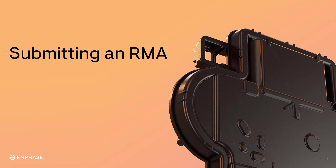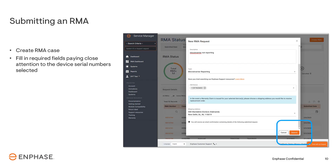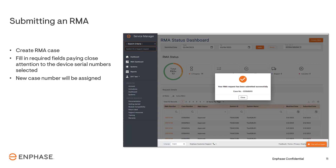Submitting an RMA case is easier than ever with Service Manager. Create an RMA case by clicking the Create RMA button in the upper right corner of the screen. Fill out the required fields and press Submit. Pay close attention to the device serial numbers you select. Once the RMA has been submitted, a new case number will be assigned so that you can track it.